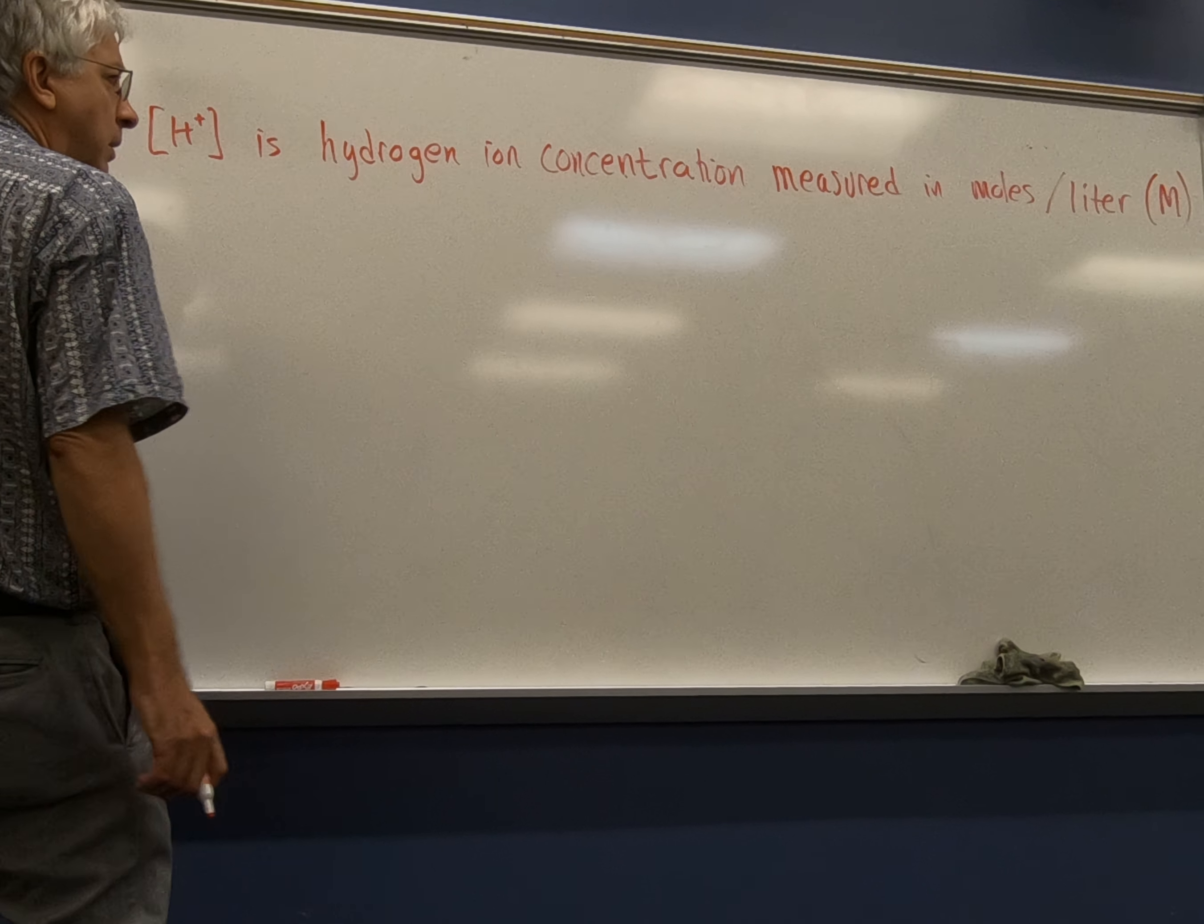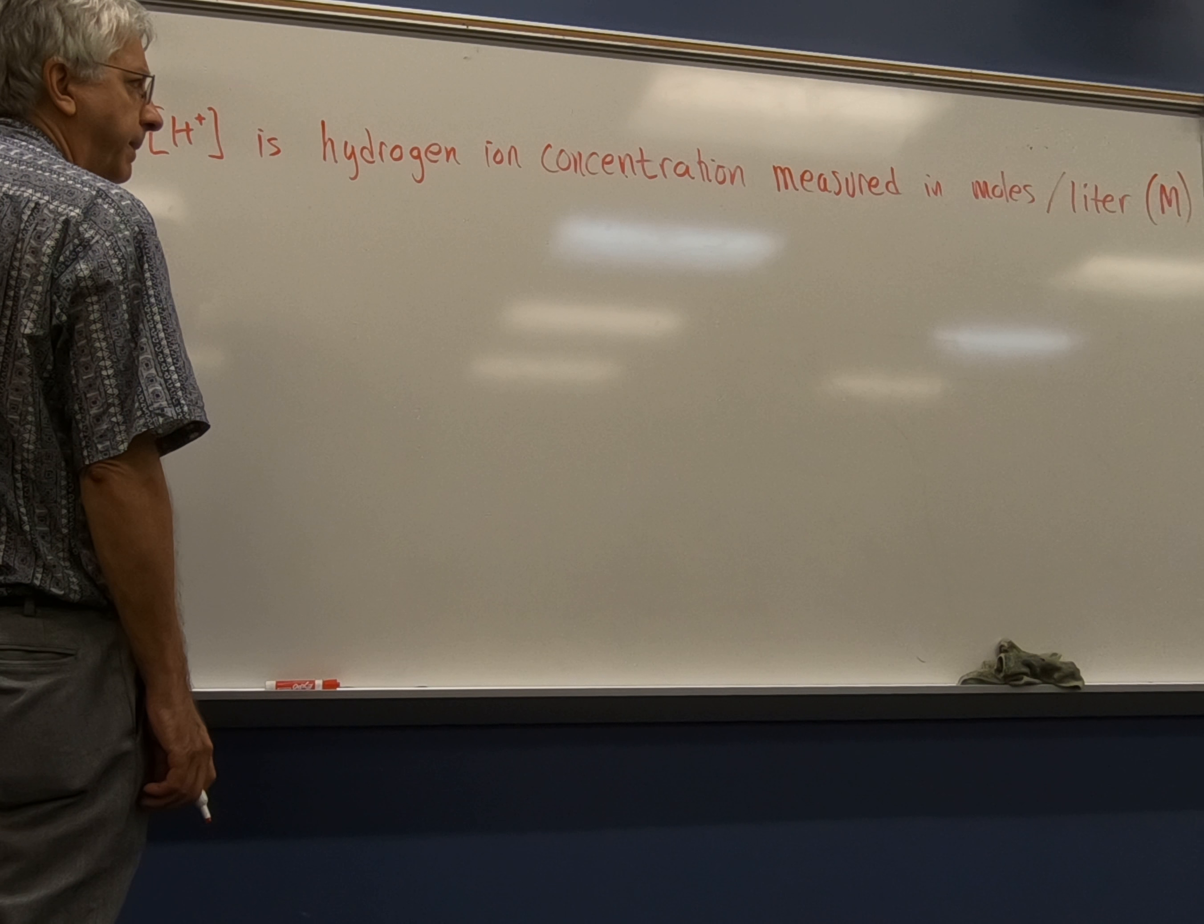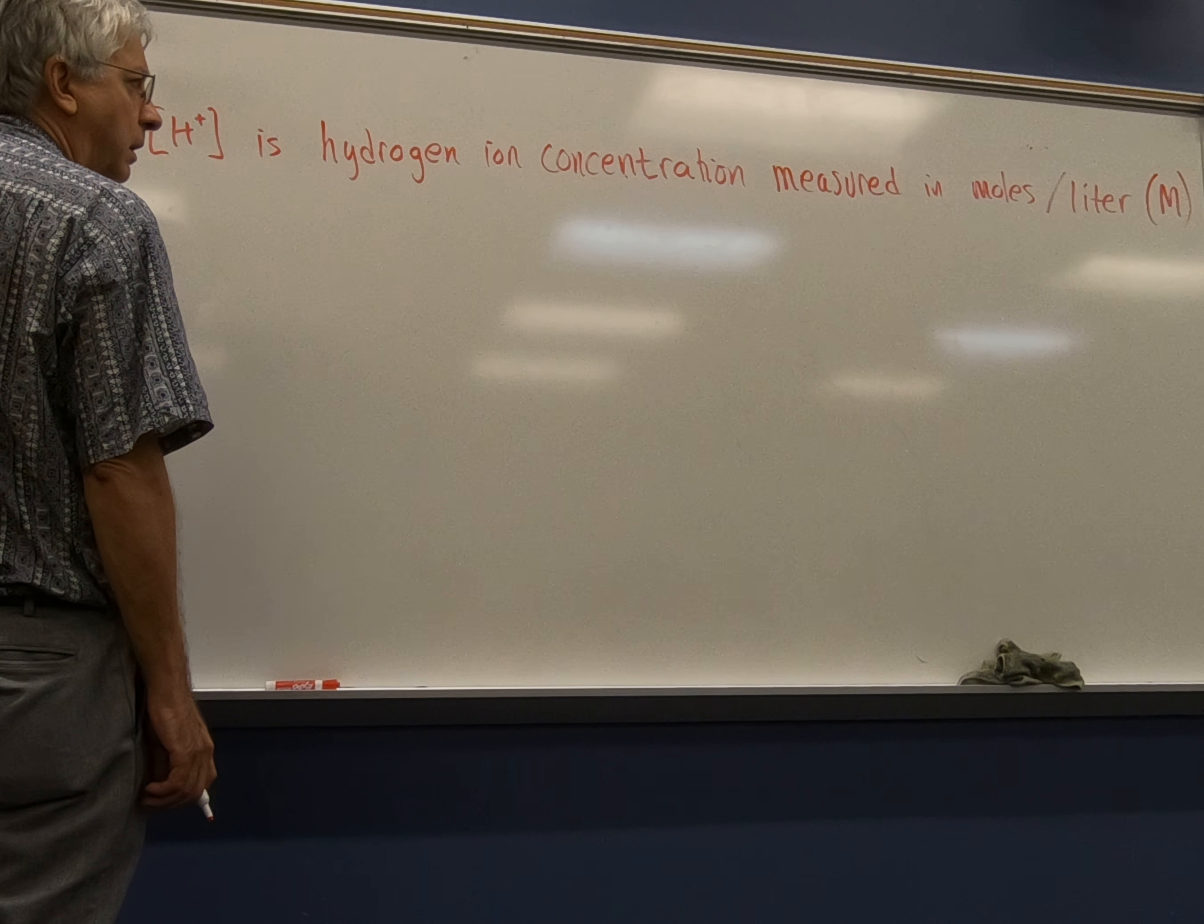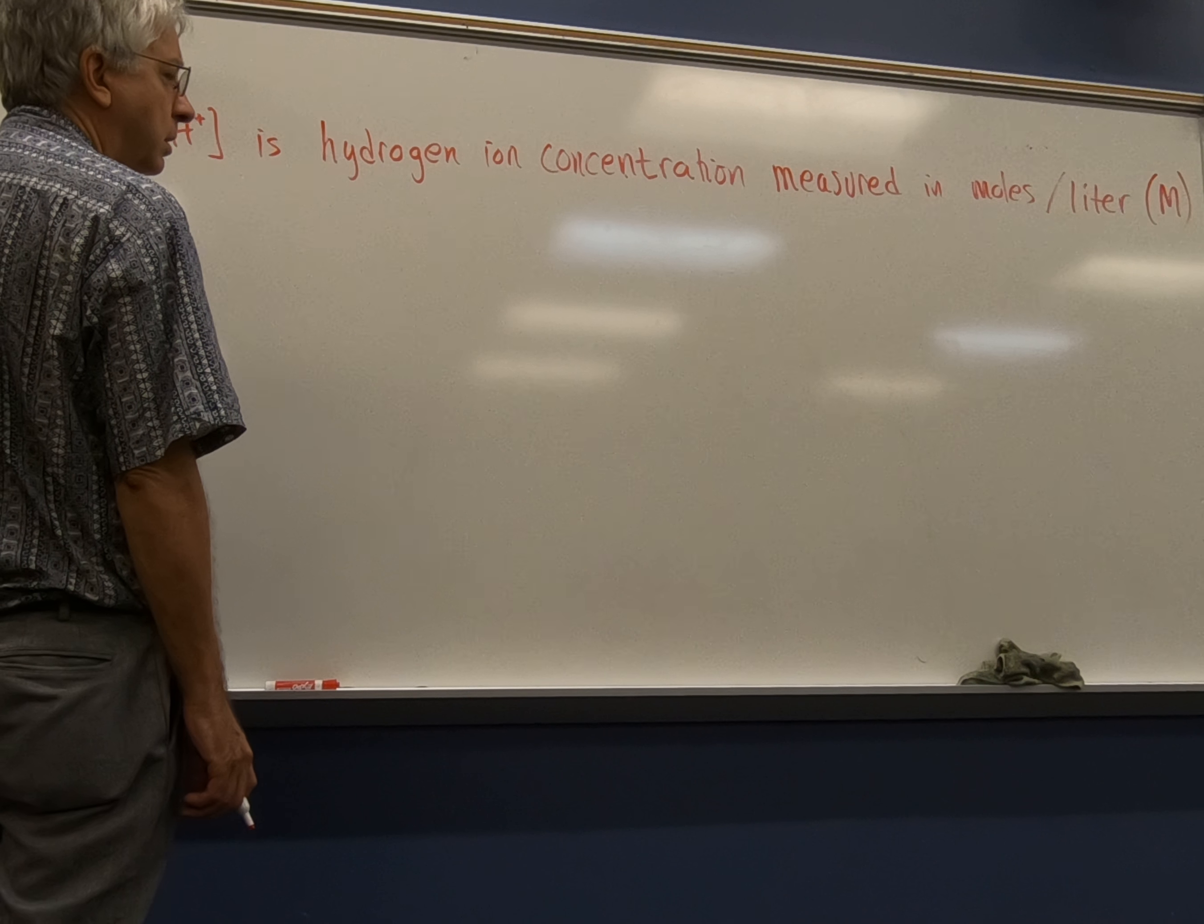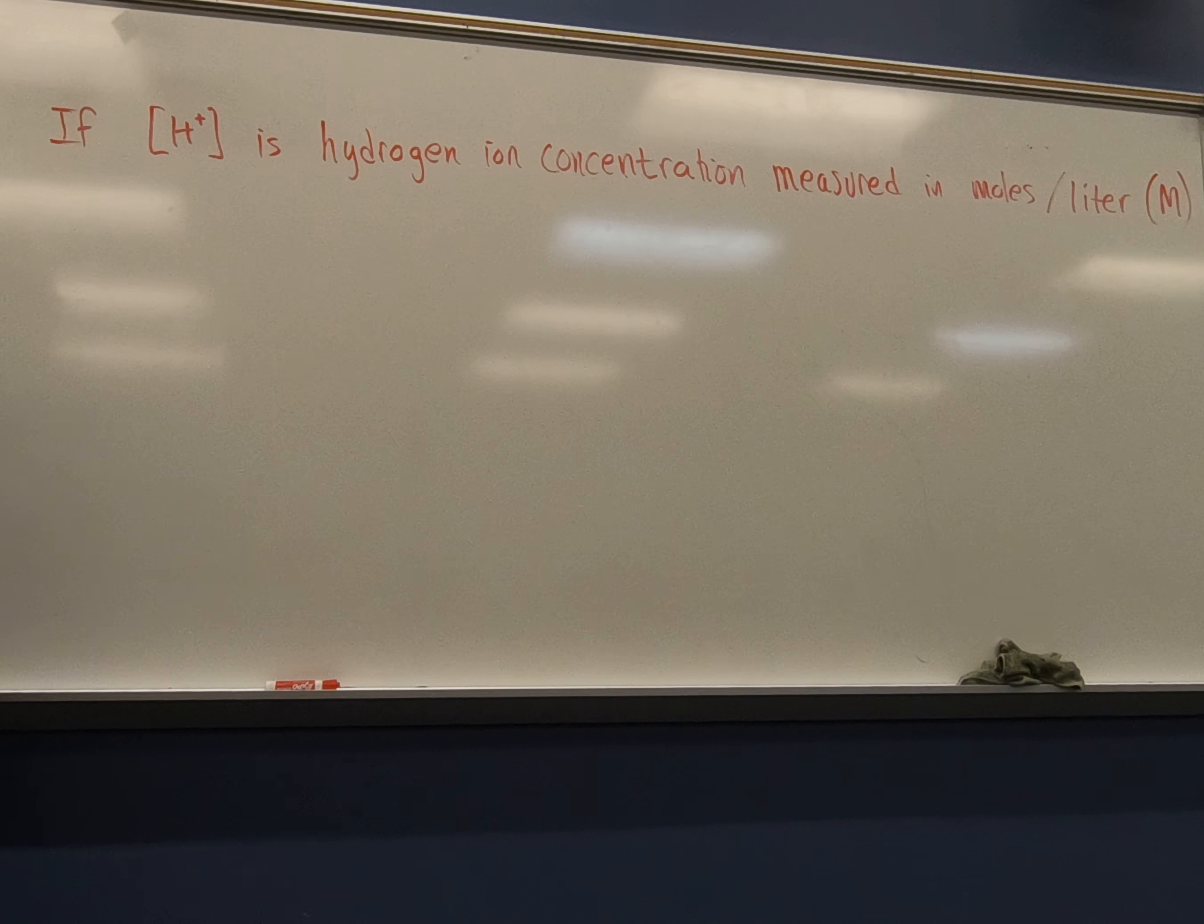So, so, so then the pH is the negative log of that molarity. Okay, so they give an example here, what do they say? If the concentration is 10 to the negative fourth molarity, then the pH is the negative log of 10 to the negative fourth, and that's four.